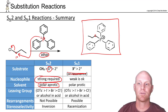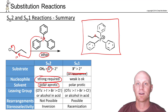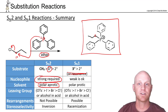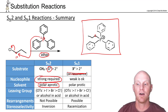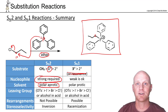We've worked through a number of examples. Make sure you know how to use this table to predict which mechanism you're doing and predict your products. In the next chapter we're going to incorporate elimination reactions, which sometimes compete with these substitutions, making things even more complicated. Work through a number of examples and really get this down before moving on to the next chapter.